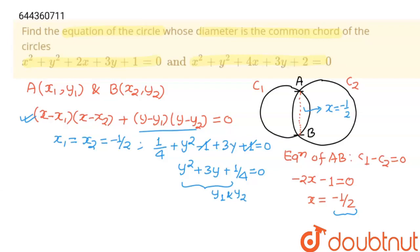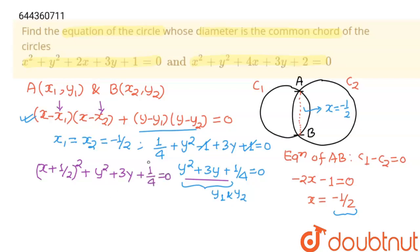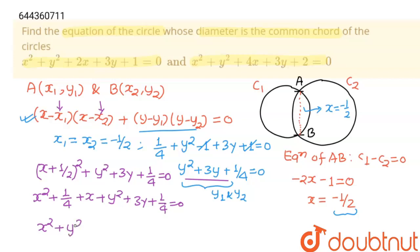Everything is solved. Now writing the equation of the circle: since x1 = x2 = -1/2, the x-part becomes (x + 1/2)², and the y-part is y² + 3y + 1/4. Expanding (x + 1/2)² gives x² + x + 1/4. So the full equation is x² + y² + x + 3y + 1/4 + 1/4 = 0, which simplifies to x² + y² + x + 3y + 1/2 = 0.